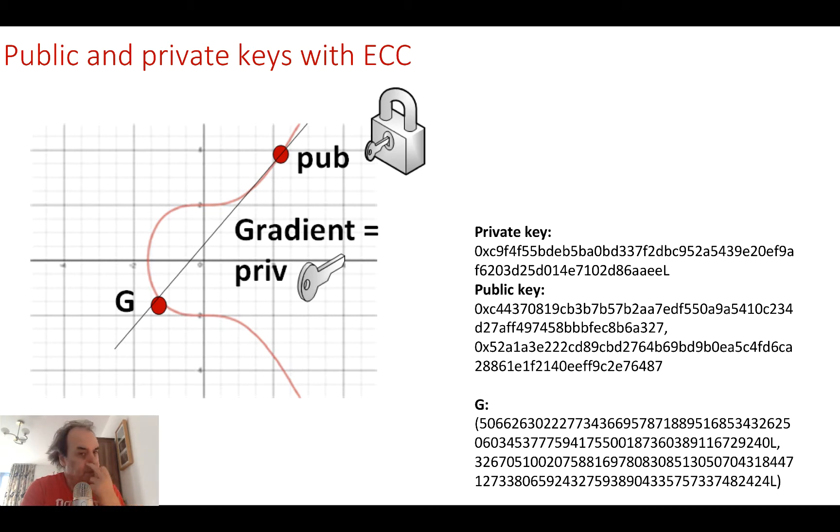Here are some of the basics around elliptic curve encryption. We have a point on an elliptic curve G, and then we create our private key, a random number. This random number is the gradient of the line that we project from G until we find our public key, which is an X,Y point on the curve.